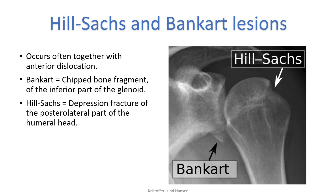Together with anterior dislocation there are two common things that often occur at the same time: the Bankart and the Hill-Sachs lesions. During dislocation to the anterior side, the humerus and the inferior part of the glenoid are pushed against each other with large force. This can cause a small chip of bone to be chipped off from the glenoid — called the Bankart lesion. Additionally, direct trauma to the shoulder can cause the head of the humerus to be pushed inwards; this compression fracture is called a Hill-Sachs lesion.